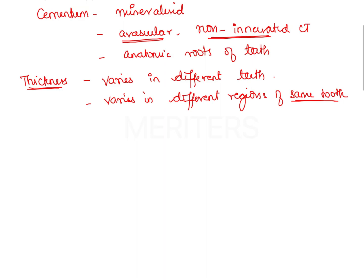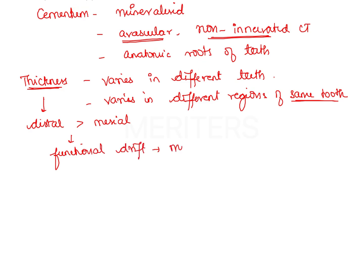The thickness of cementum is greater on distal surfaces compared to mesial surfaces. This is attributed to the functional drifting of teeth towards the mesial side, which causes greater cementum thickness on distal surfaces and less on mesial surfaces.